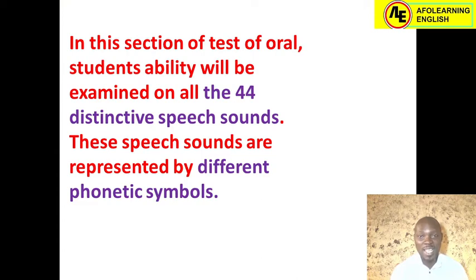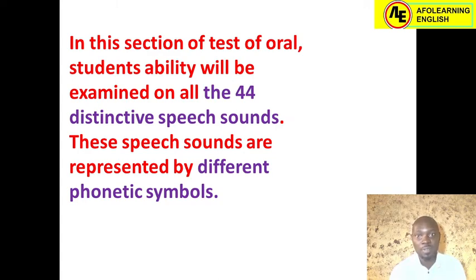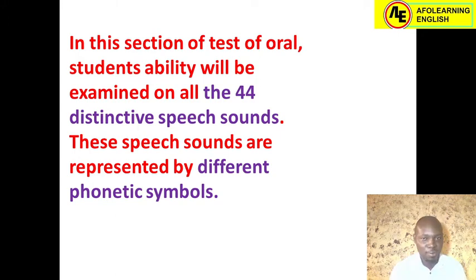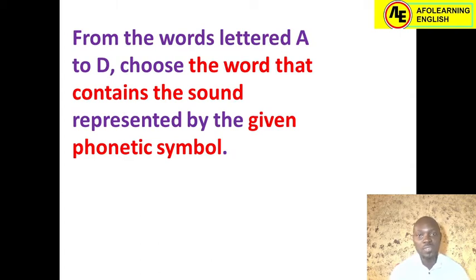In this section of the test of orals, students' ability will be examined on all 44 distinctive speech sounds. These speech sounds are represented by different phonetic symbols. This kind of question is in Section 7 of the test of orals in WAEC — the last set of questions. We have different phonetic symbols: consonant sounds as well as vowel sounds, and students must pick the correct option. We're looking at questions from 2017 to 2018.